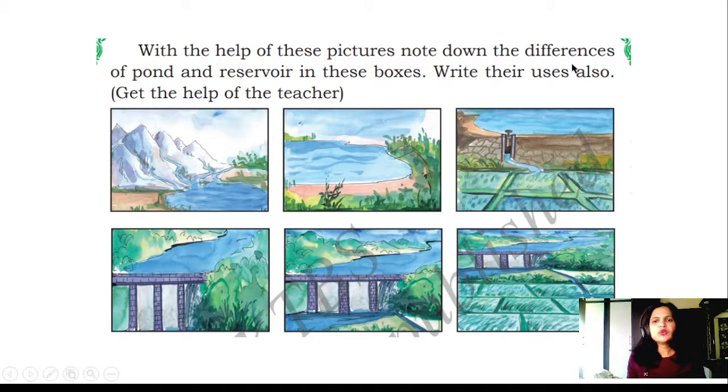With the help of these pictures, note down the differences between pond and reservoir in these boxes. Write their uses also. Get the help of the teacher. Which is a pond? This is a pond, I'll write P here, because all the water from the hill is going to be collected in this place and it is not going anywhere. It is a shallow deep hole where water is collected. It is called a lake. This is also a pond. Water is being collected in a particular place, it is not flowing out. This is a reservoir, this is also a reservoir. This is a reservoir with backwater. Water is flowing from the reservoir to the fields for agriculture.